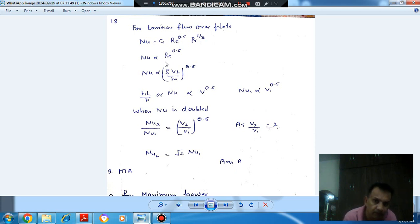Reynolds number is ρVL/ν and Nusselt number is hL/k. So we can say NU is directly proportional to V raised to 0.5. Or, Nusselt number is directly proportional to V raised to 0.5.